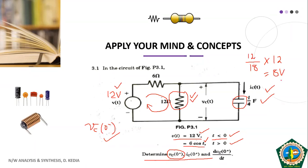This 8 volt is the voltage across the 12 ohm resistance for T less than 0. Since these two are in parallel, the voltage across the capacitor at 0 minus is also 8 volt. So VC(0−) is 8 volt, which gives us VC(0+) equal to 8 volt. This is answer number one, because in the case of a capacitor, voltage cannot change instantaneously, so VC(0+) equals VC(0−) equals 8 volt.